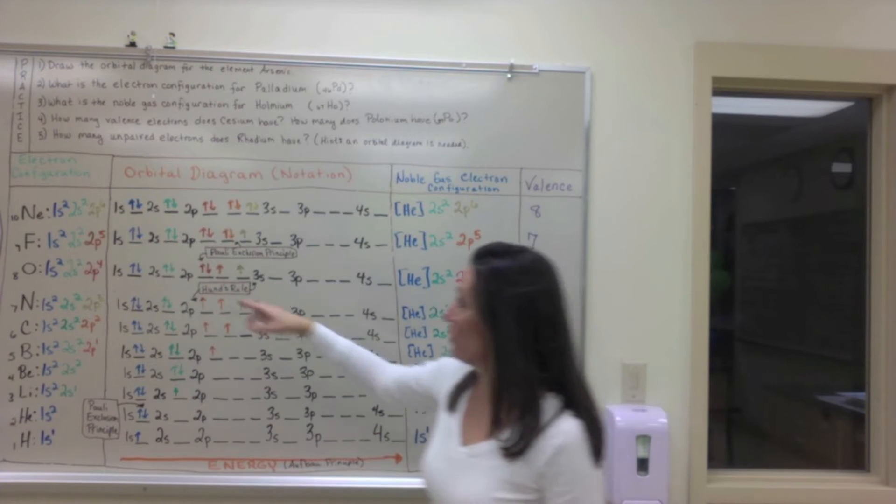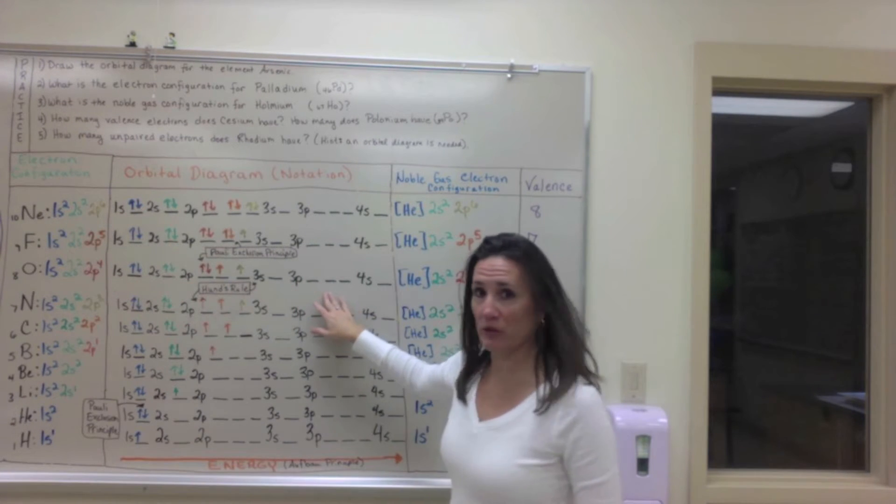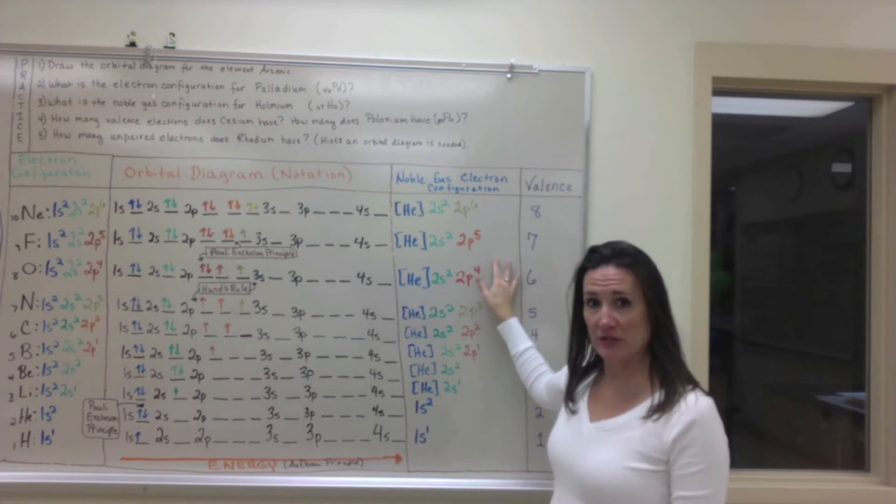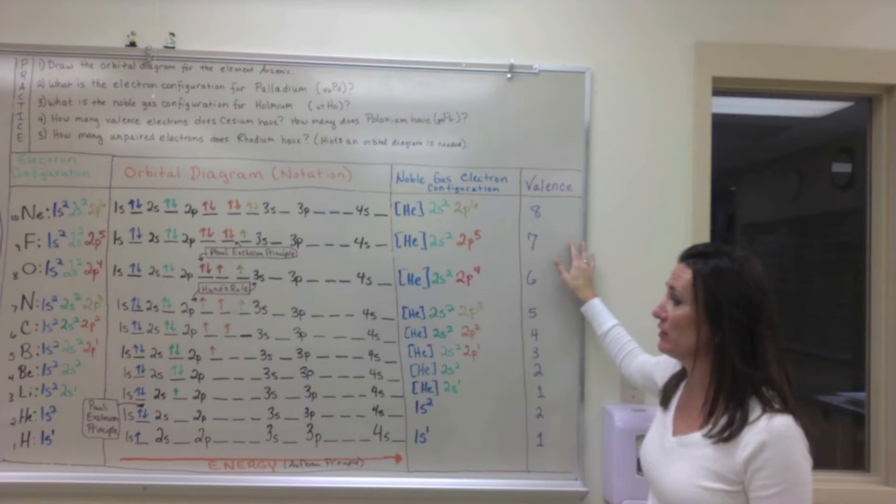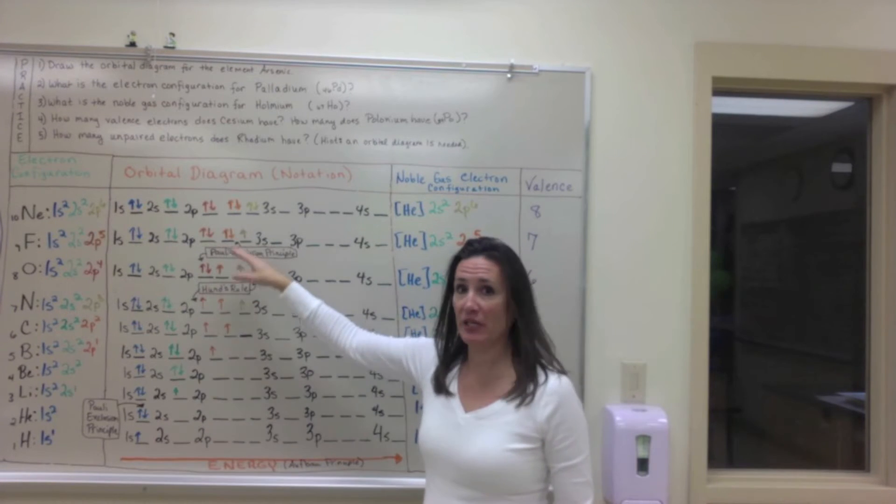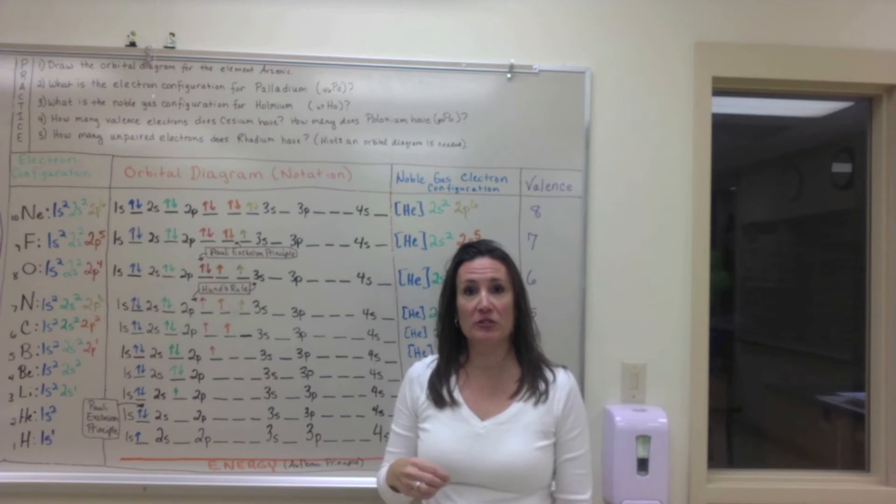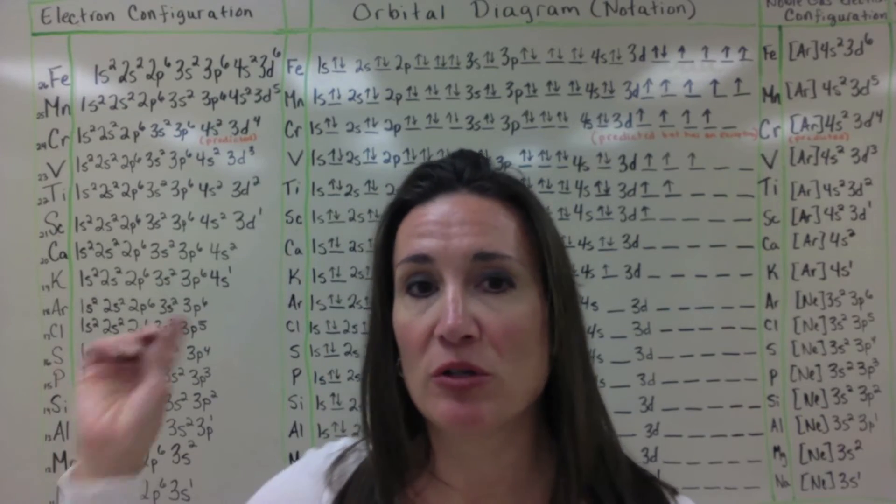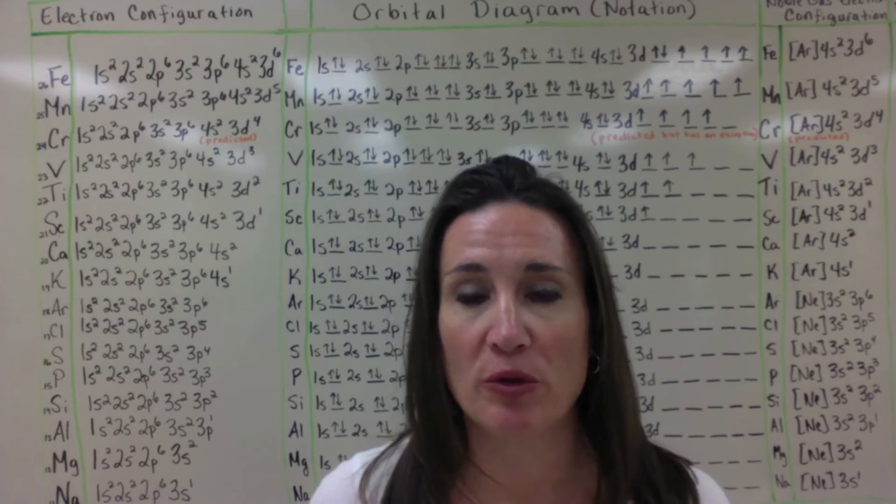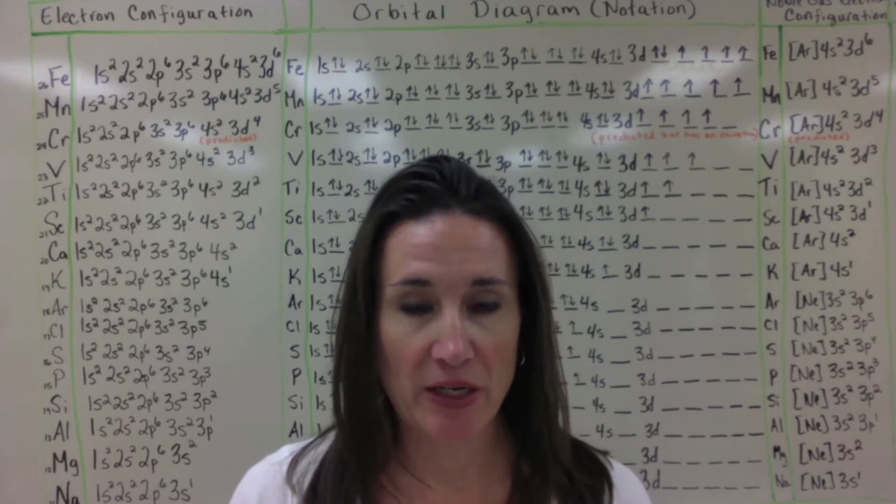In that foldable you wrote electron configurations, orbital diagrams, noble gas electron configuration, and valence for the elements hydrogen to neon and from sodium to iron. If you have a hard time including all these orbital diagrams in your foldable the way it's built, you can add an addendum page.